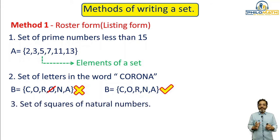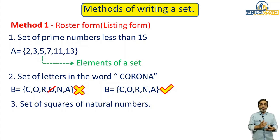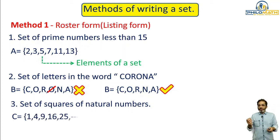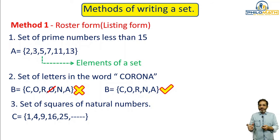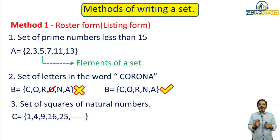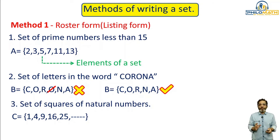One more example: the set of squares of natural numbers. Natural numbers are 1, 2, 3, 4, 5, and so on. Writing the squares of these numbers, the answer is C = {1, 4, 9, 16, 25, ...} and so on. This is how we write a set in listing form — you simply write down all the elements of the answer.